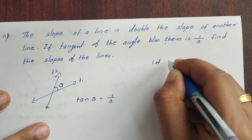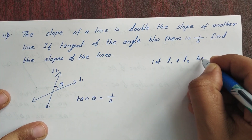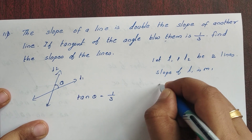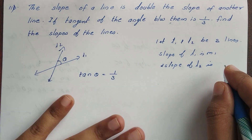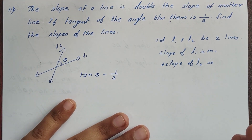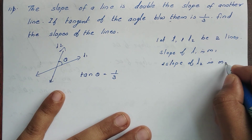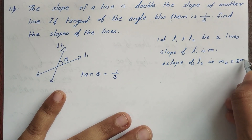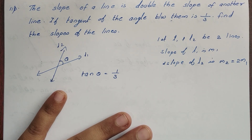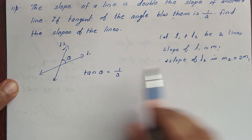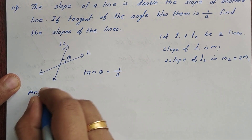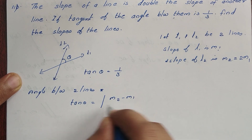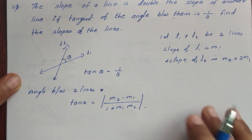Let L1 and L2 be the two lines. Slope of L1 is M1. The slope of a line is double the slope of another line, so M2 is equal to 2 into M1. Then the angle between two lines is given by the equation: tan theta is equal to modulus of M2 minus M1 divided by 1 plus M1 M2.